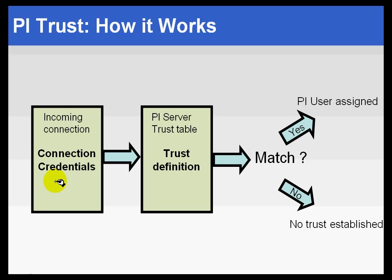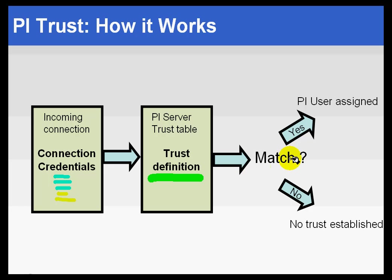Those credentials could be three to five things. For certain connecting clients we can get up to five connection credentials. We look within the PI Trust table to see if there's a Trust definition that matches the incoming connection credentials. If there is a match, we assign a PI user to that incoming connection, and the application gets all the privileges of that PI user.